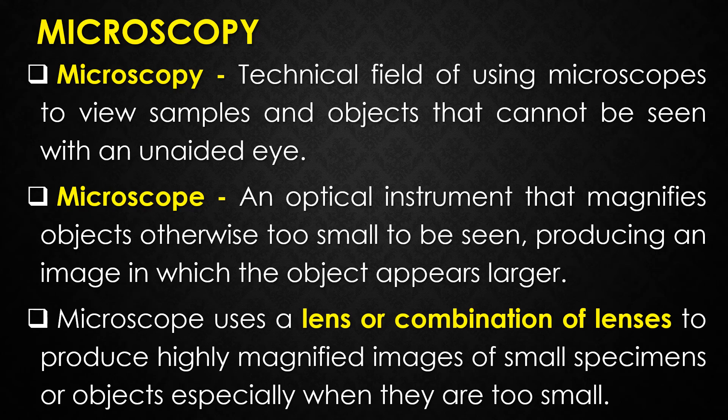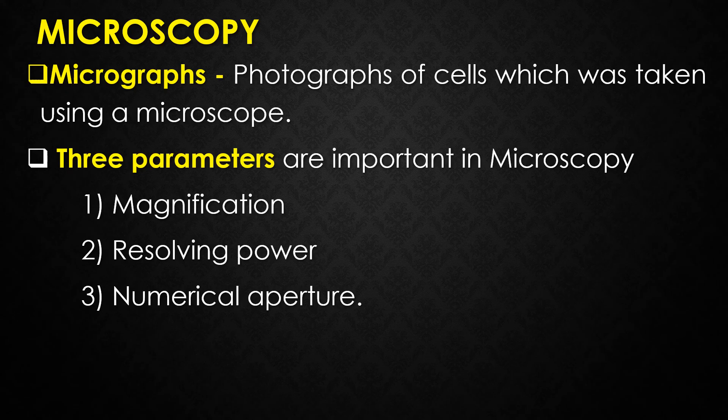Microscopy is the technical field of using microscopes mainly to view the samples and objects that cannot be seen with the unaided eye — that is, objects that are not within the resolution range of the normal human eye. A microscope is an optical instrument that magnifies objects which are too small to be seen, producing an image in which the object appears larger. The microscope uses a lens or a combination of lenses to produce highly magnified images of small specimens or objects, especially when they are too small to be seen by the naked eye.